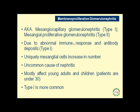Mesangial cells mediate inflammation, produce and remove basement membrane and other matrix substances, and help with the uptake of immune complexes. By virtue of their contraction or relaxation ability, they are also able to modify the GFR — the glomerular filtration rate. MPGN is an uncommon cause of nephritic syndrome that mostly affects children and young adults. Type 1 is by far the most common and most commonly tested on USMLE and Comlex examinations.